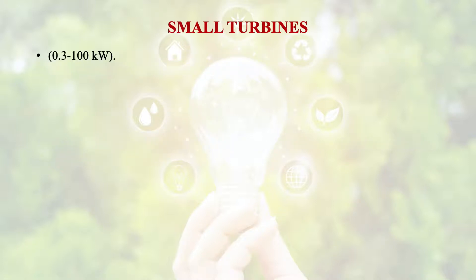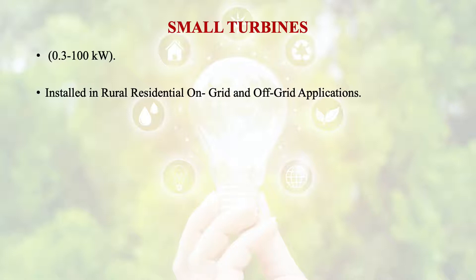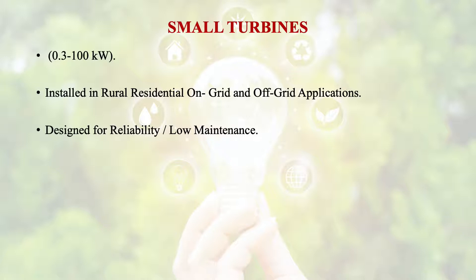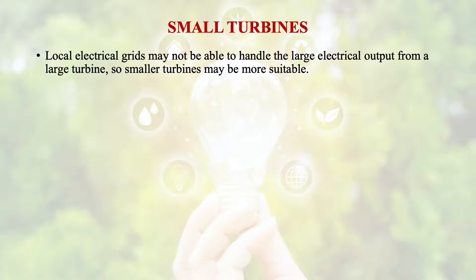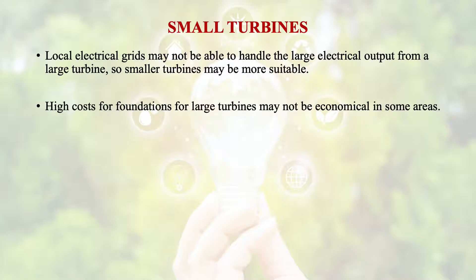Small turbines are for 0.3 to 100 kilowatt power generation. These are installed in rural residential areas for on-grid and off-grid applications, and are designed for reliability with low maintenance. The wind speed required for these turbines is 4 meters per second. Local electrical grids may not be able to handle large electrical output from a large turbine, so smaller turbines may be more suitable. High cost of foundations for large turbines may not be economical in some areas, and landscape considerations also favor small turbine applications.